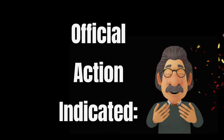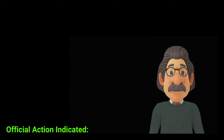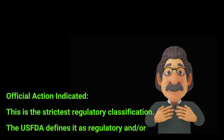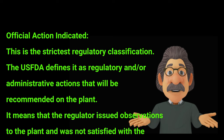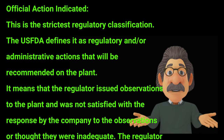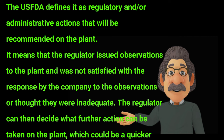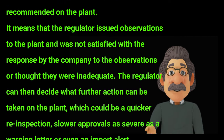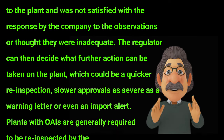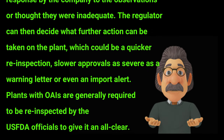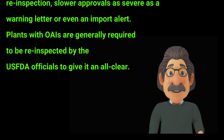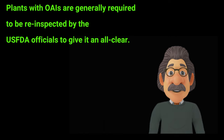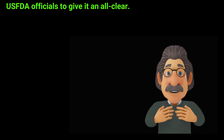The other one is Official Action Indicated (OAI). This is the strictest regulatory classification. The U.S. FDA defines it as regulatory and/or administrative actions that will be recommended on the plant. It means the regulator issued observations to the plant and was not satisfied with the response by the company, or thought the response was inadequate. The regulator can then decide what further action can be taken, which could be a quicker re-inspection, slower approvals, as severe as a warning letter, or even an import alert. Plants with OAI are generally required to be re-inspected by U.S. FDA officials to give an all clear.